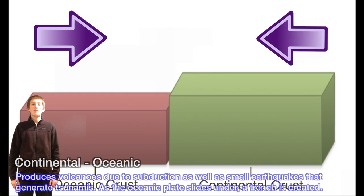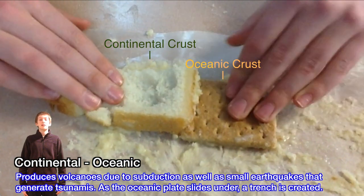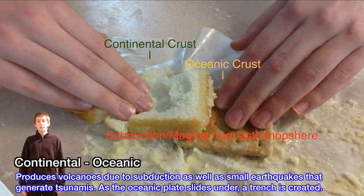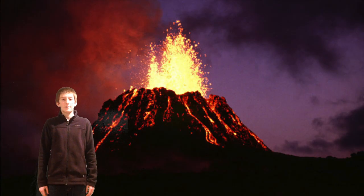Another type of convergent boundary is continental crust to oceanic crust. It produces volcanoes due to subduction and also causes earthquakes. These earthquakes can cause tsunamis. Near-ocean trenches can also be formed at this boundary. The effect of this boundary is the Kilauea volcano in Hawaii.